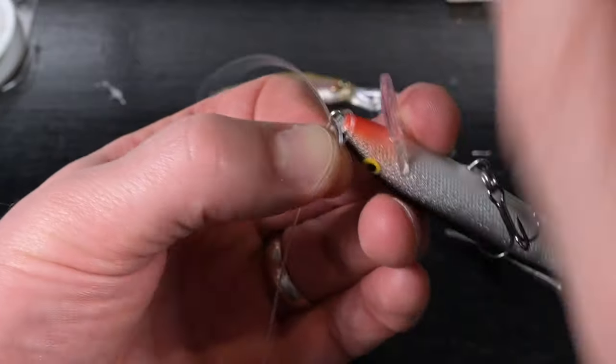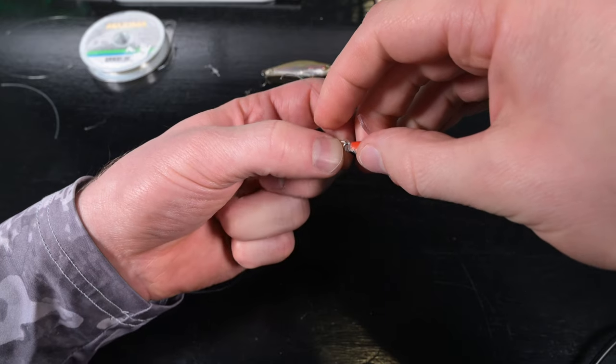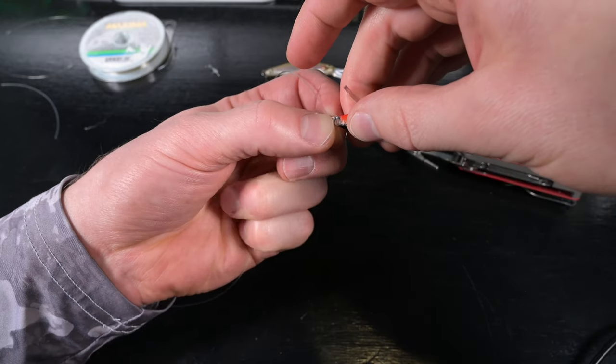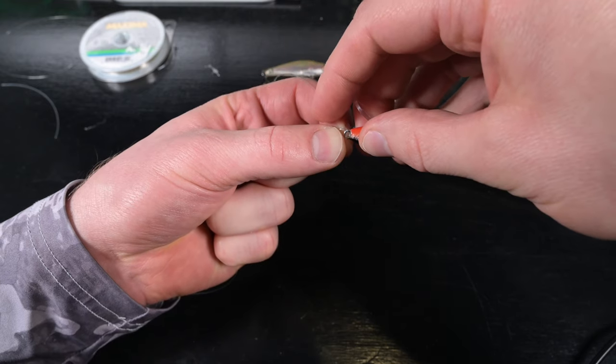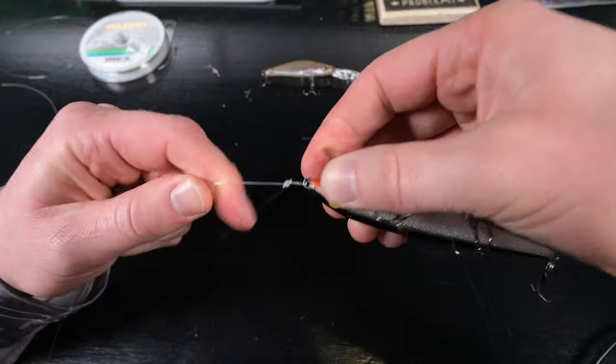I push the bitter end through so it's splitting the loop on the left and the loop on the right. Now we pull the lure through, using these two fingers to pull the standing end tight and make the loop super tight.